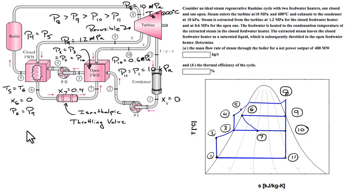Hey all, so this is the second homework problem. I drew out the different pressures and the different qualities that the statement is giving you. You're to consider an ideal regenerative Rankine cycle, and steam is entering the turbine at 10 MPa, and the turbine is bleeding off at two points.